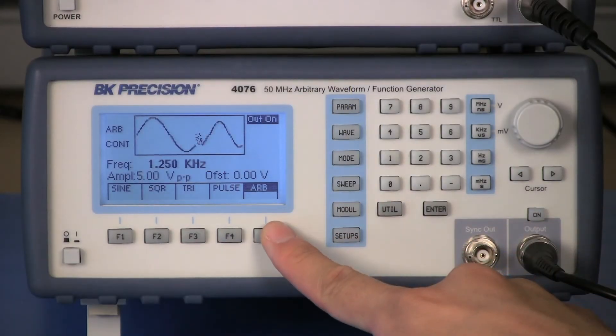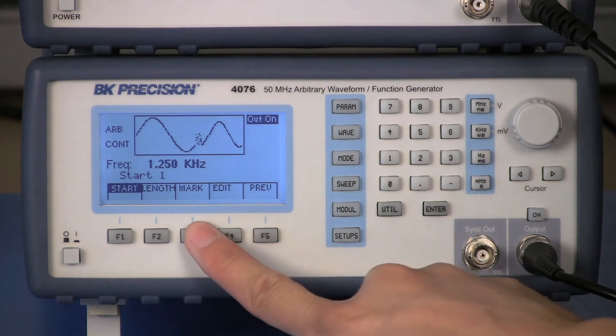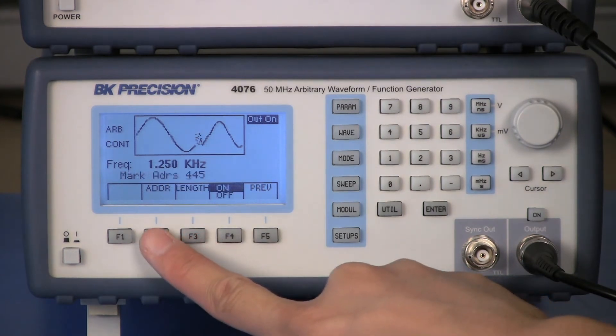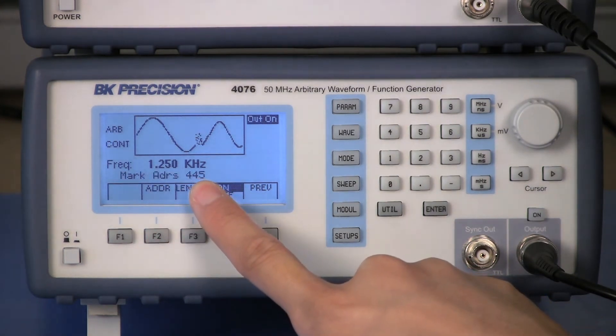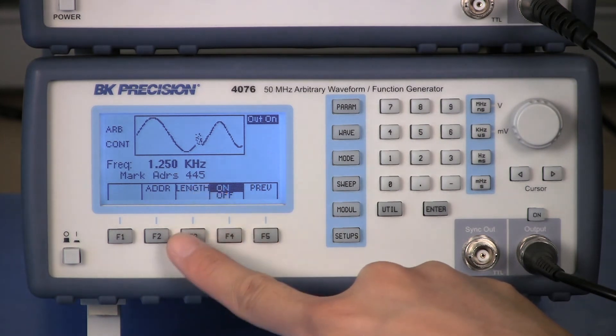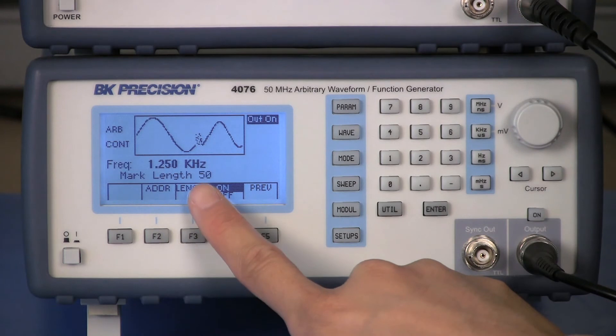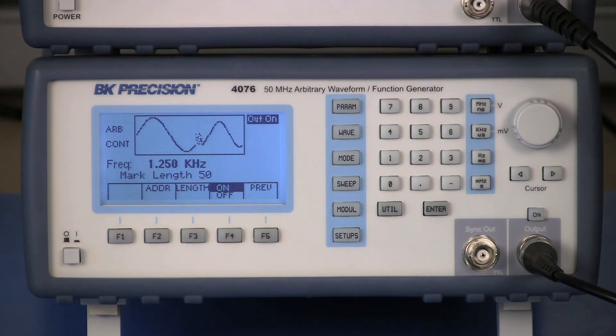In the Art menu of the 4076, I will select Mark, then select ADDR for address and set it to 445, which is the beginning point of the noise. Then select Length and set it to 50, for this is how long the noise is in the arbitrary waveform. Now I will select ON.